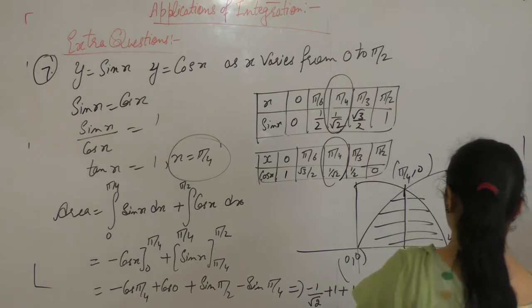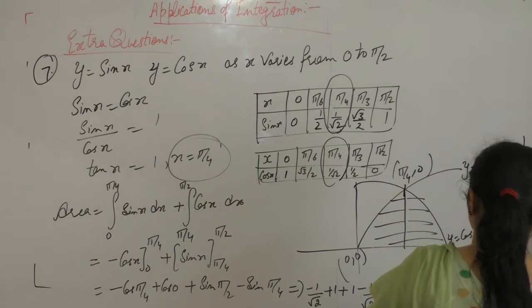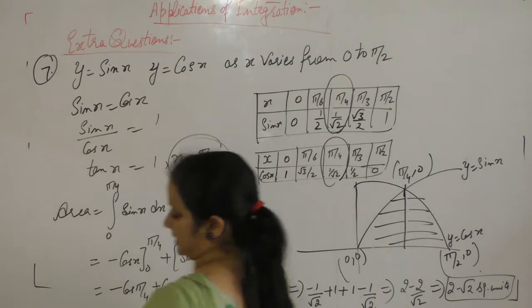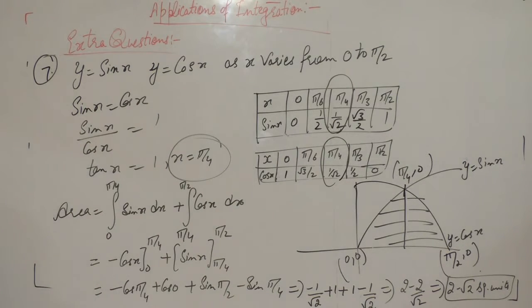So we get the answer as 2 minus square root of 2 square units.